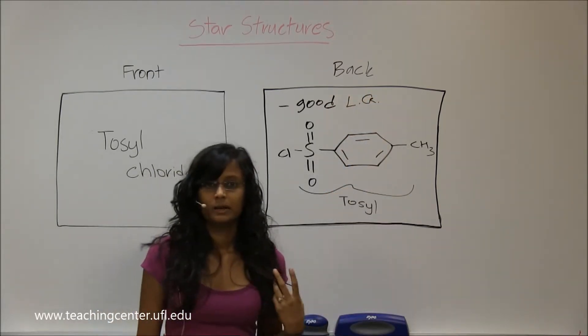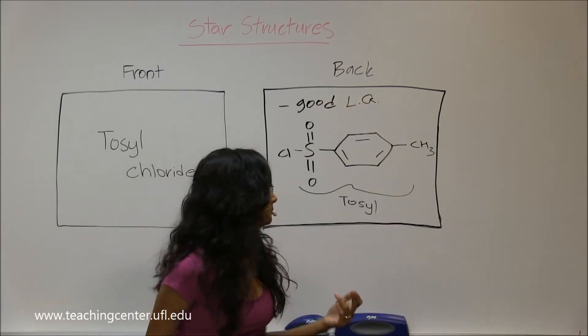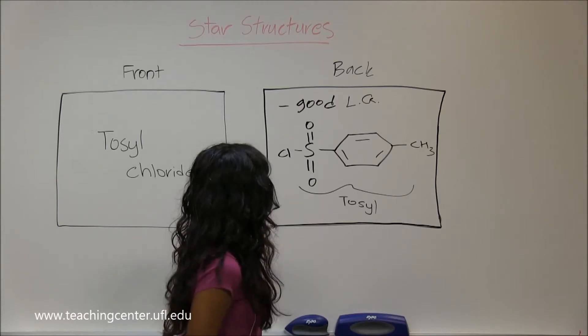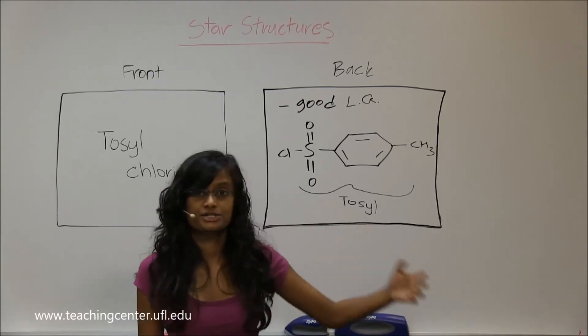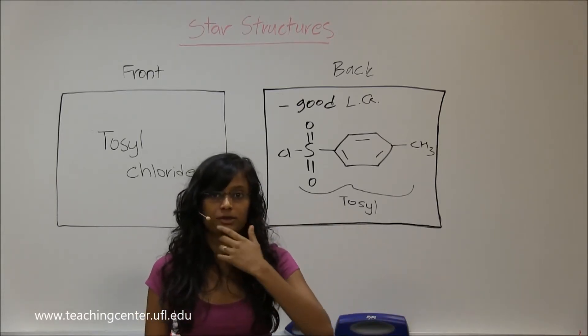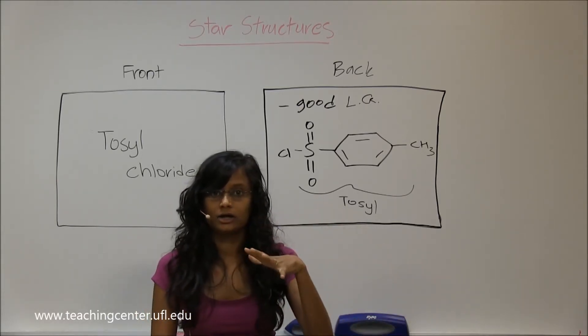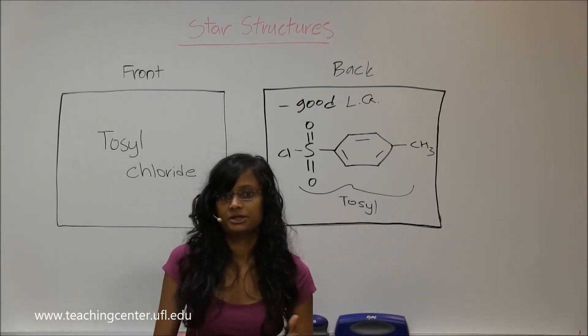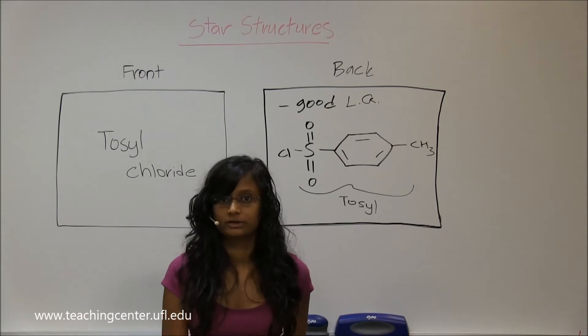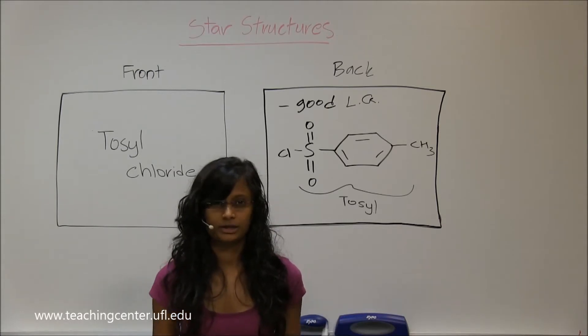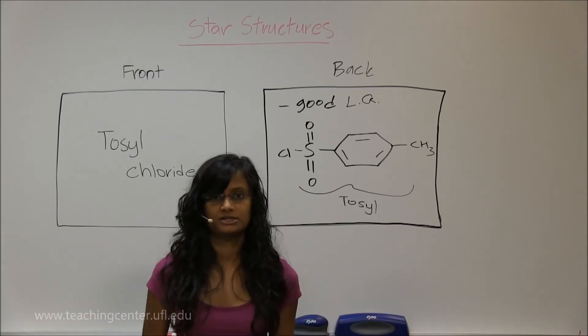You'll use tosyl chloride in reactions where you want your alcohol to be turned into a good leaving group. You're going to learn this in chapter 10.